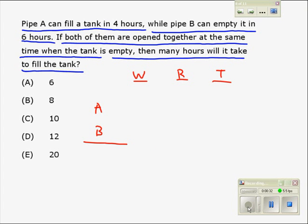In the given situation, they are working together, so we will write this part. What is given is that pipe A can fill the tank in 4 hours, while pipe B empties it in 6 hours. Remember, pipe B is emptying it.